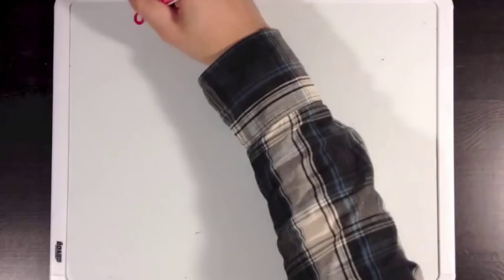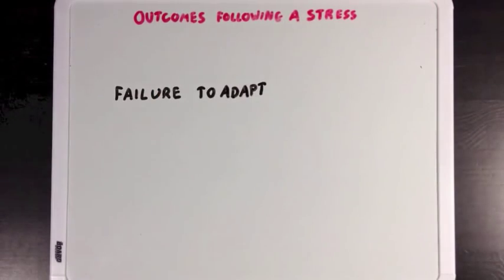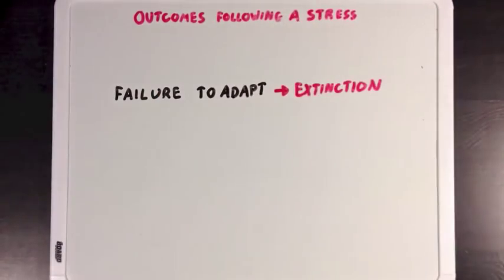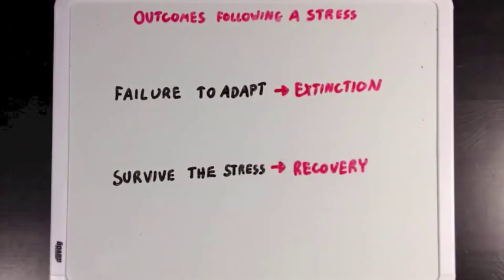So there are generally two outcomes that usually result from a big environmental stress. Either the population can't adapt to the change and goes extinct, or somehow the population recovers from that stress and can build up its population again. And we call this a bottleneck.